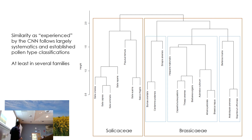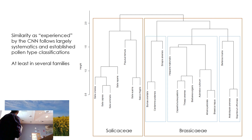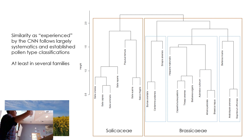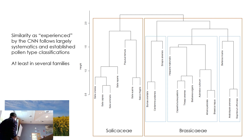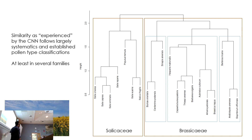Brassicaceae is a bit harder because they are all really similar across a large group of species, and that's a problem. Grape, for example, is an important crop that pollinators visit, and it's hard to separate. Also, interestingly, Salicaceae — willow trees — are actually quite similar to the Brassicaceae morphologically, and as far as I know they're not closely related at all.